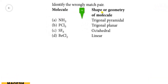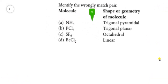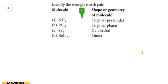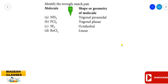Question 16: Identify the wrongly matched pair. The left-hand side gives the molecules and the right-hand side gives the geometries. This is discussed on the basis of Valence Shell Electron Pair Repulsion theory, that is VSEPR theory, which is used to explain the geometry of simple molecules like ammonia, PCl₅, etc.